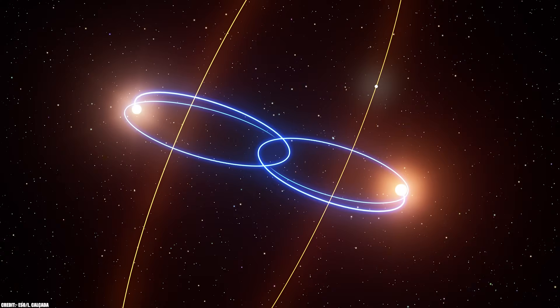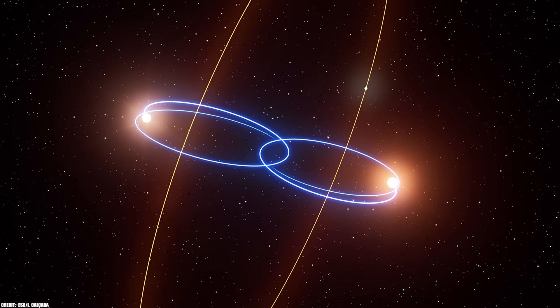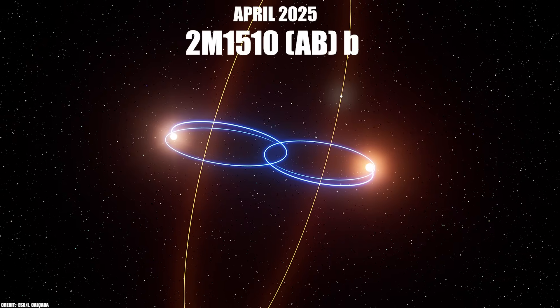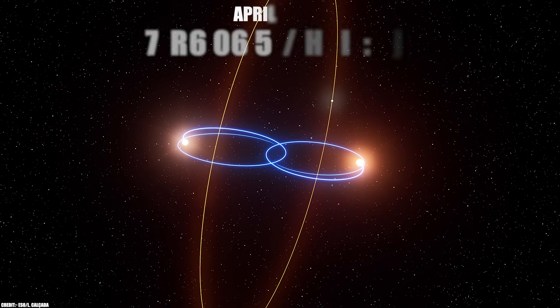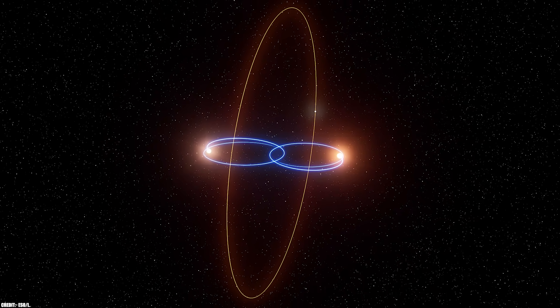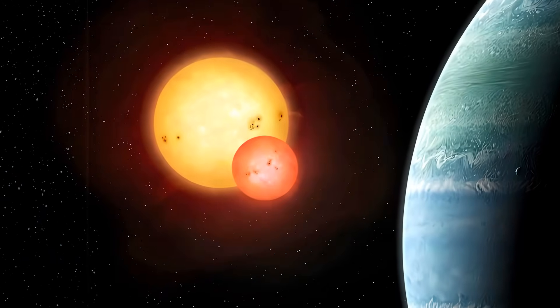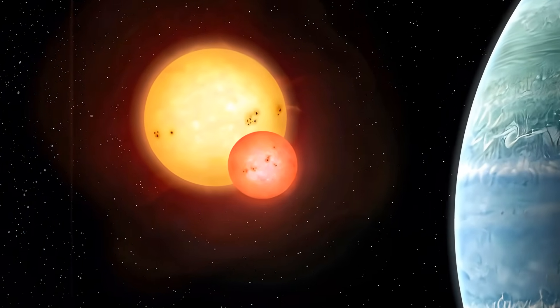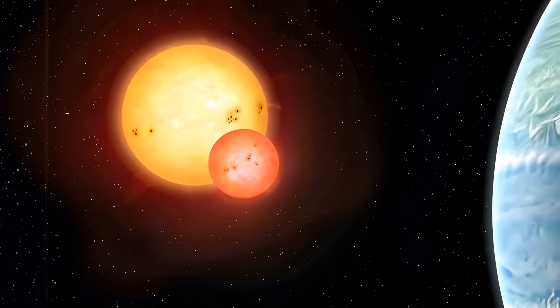Science fiction has become reality with the groundbreaking April 2025 discovery of 2M1510ABb, the first-ever confirmed polar circumbinary planet. While previous Tatooine planets have been discovered orbiting around two stars, this one takes the concept to an entirely new dimension.